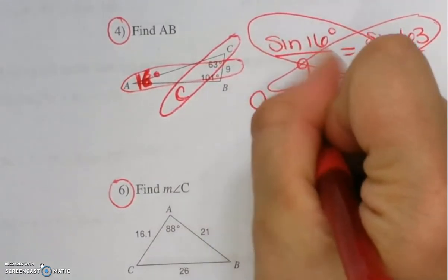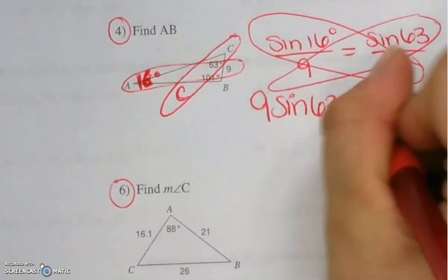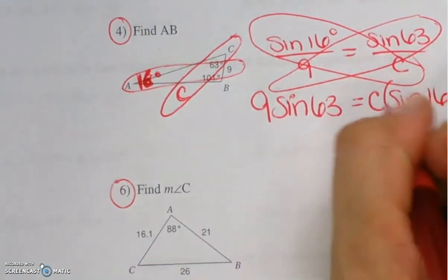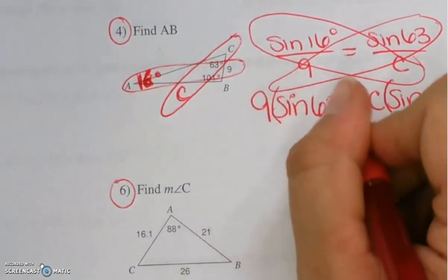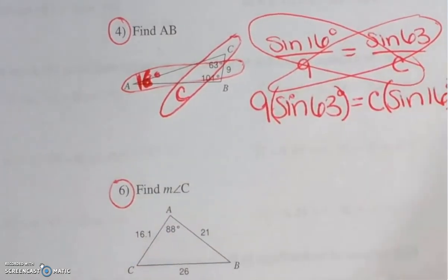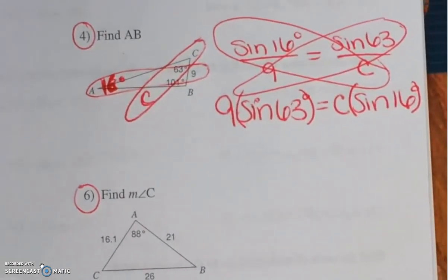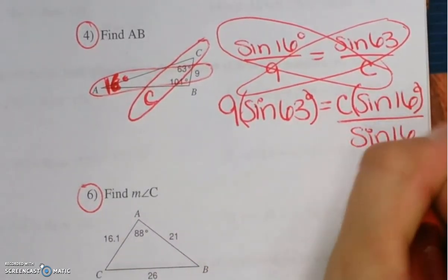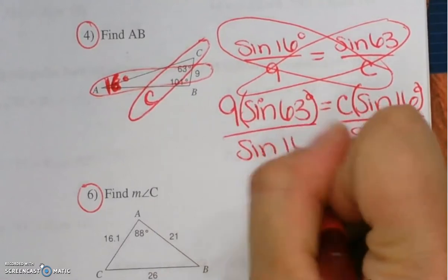So 9 times sine of 63 equals C times sine of 16. Sometimes people like to put parentheses so that you can see that it's sine of 63 degrees times 9. If you need to separate it visually, that's fine. So to get C by itself, I need to divide out sine 16. What I do to one side, I must do to the other.